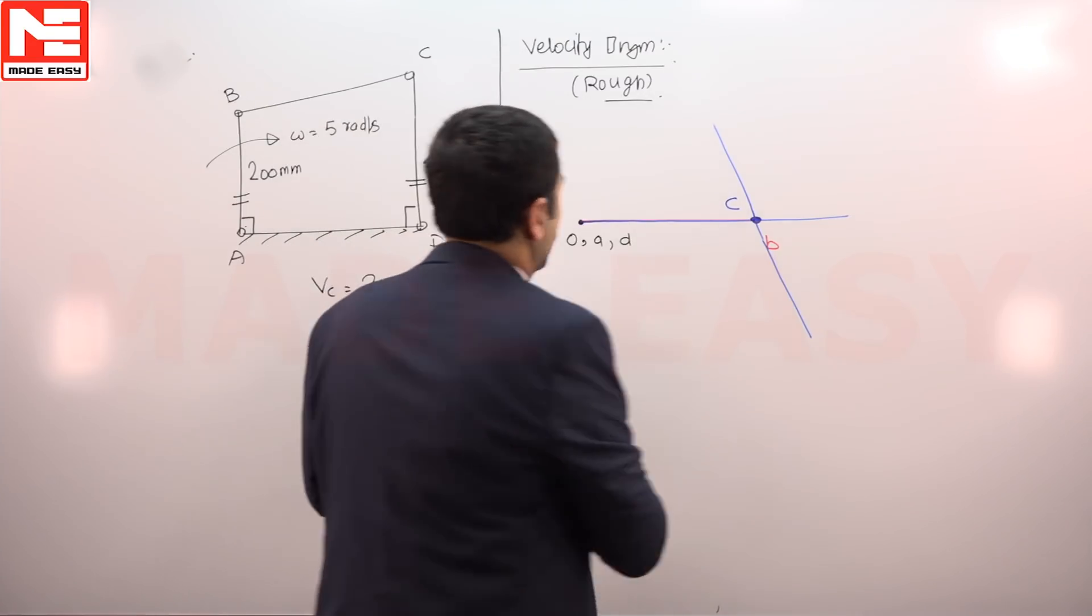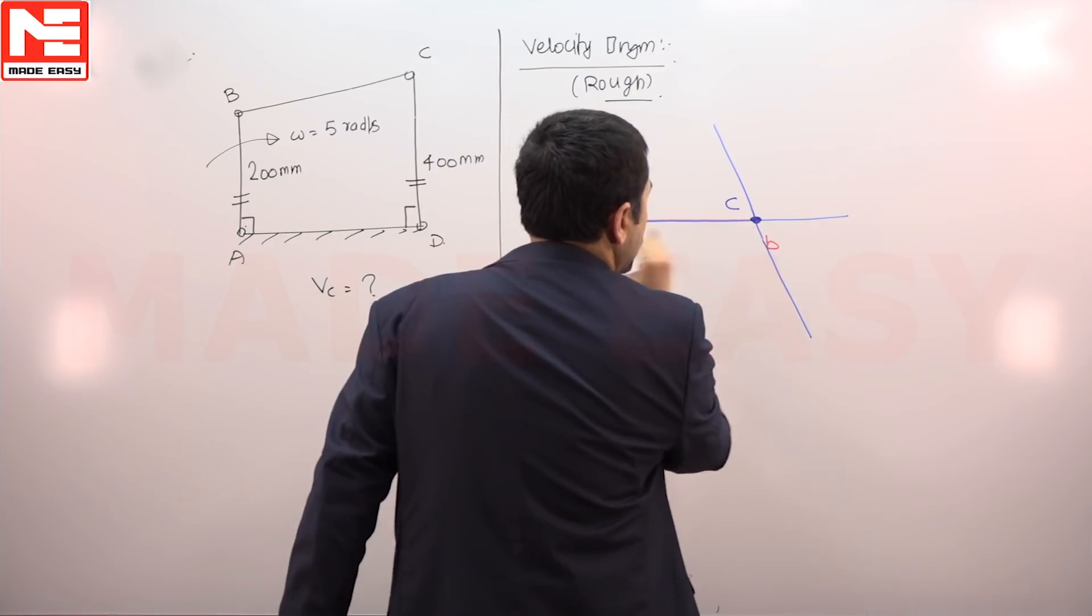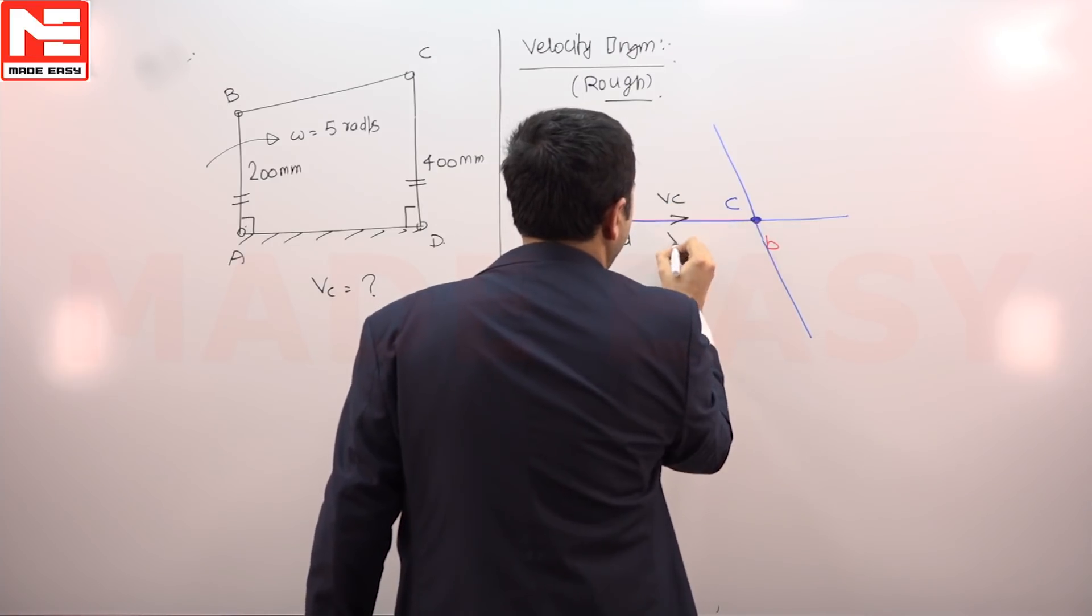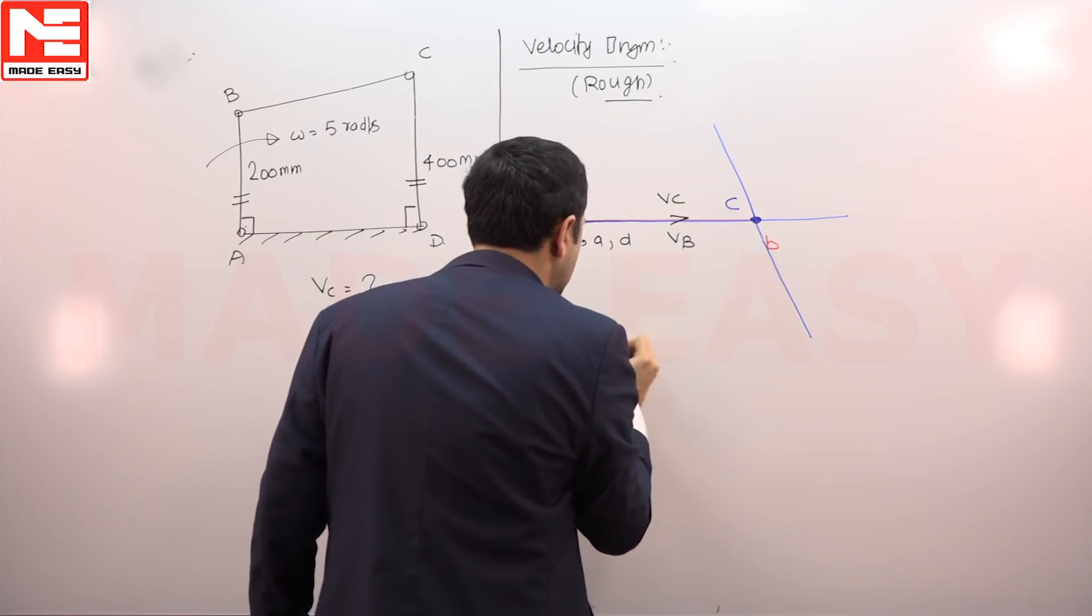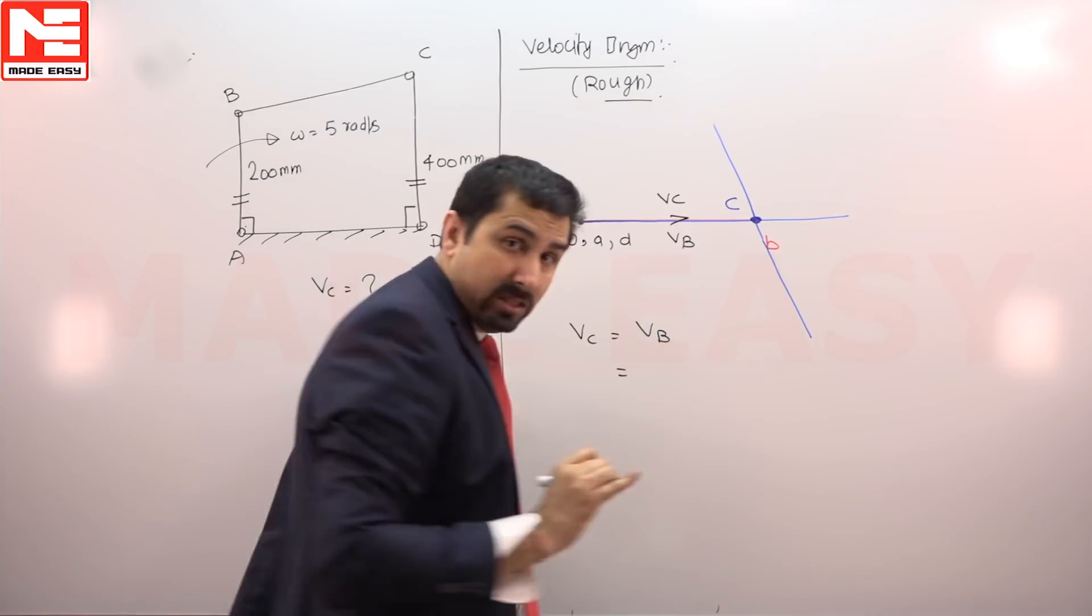So the distance OC and OB both are the same. Therefore, VC and VB both are the same. So we can directly say VC is equal to VB at this moment because both of them are parallel.